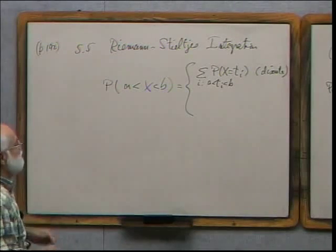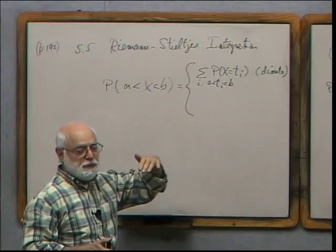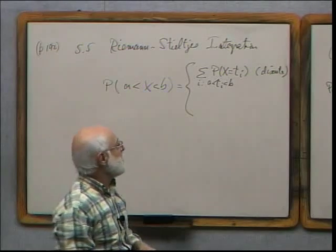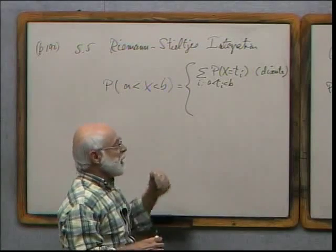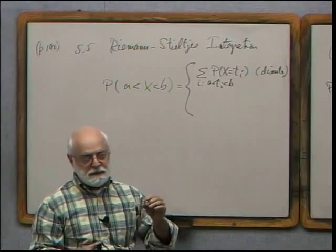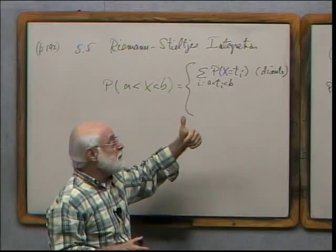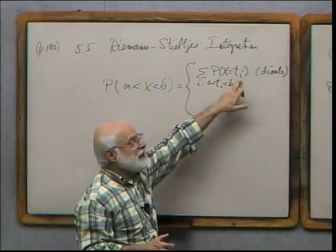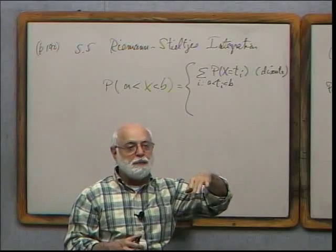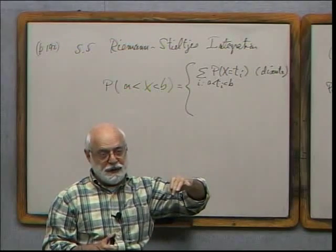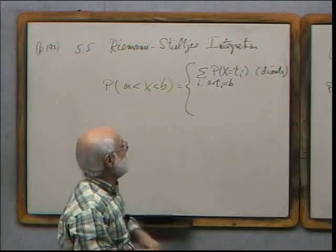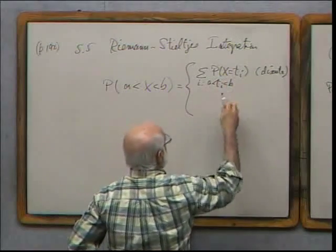Now suppose the random variable is continuous — here you make the jump from discrete math to calculus. If the random variable is continuous, it takes values on an uncountable set, which implies the probability it takes any specific value must be zero, since you cannot add up an uncountably infinite number of positive values and get a finite result. So you argue by analogy and replace the sum with something else.